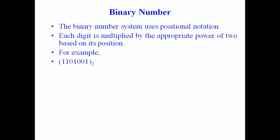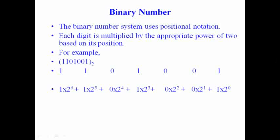For example, take the binary number 1101001. The base is 2 — that's why it is called a binary number system. The place value of the rightmost 1 is 1 × 2 raised to the power 0. The place value of the next 0 is 0 × 2 raised to the power 1. The place value of the next 1 is 1 × 2 raised to the power 3. The place value of the next 0 is 0 × 2 raised to the power 4. The place value of the next 1 is 1 × 2 raised to the power 5. The place value of the leftmost 1 is 1 × 2 raised to the power 6.